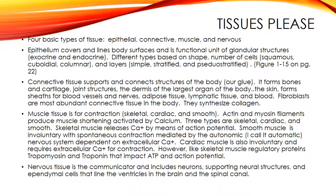Nervous tissue consists of two cell types: nerve cells called neurons, and glial cells, which are the supporting cells. Nervous tissue is found throughout the body and is part of the body's communication system. The nervous system is divided anatomically into the central nervous system — the brain and spinal cord — and the peripheral nervous system, which has nerve tissue outside the CNS. The extracellular matrix is made up of a variety of proteins and polysaccharides, and the amount and makeup of the matrix varies with different types of tissues and their function.